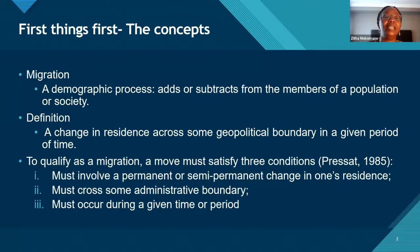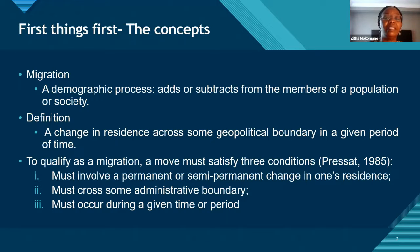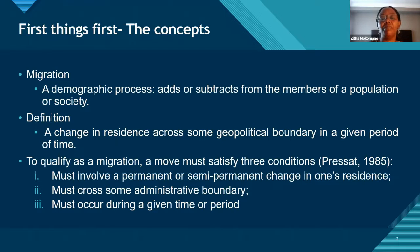There are three basic conditions a move must satisfy to be considered migration. It must involve a permanent or semi-permanent change in one's residence. If you are going to move to a province just to visit a family member, that's not migration. Semi-permanent would be someone moving across a political boundary — a country, province, or district — to study for a semester or academic year, or to work, with the final intention of returning to their place of origin.